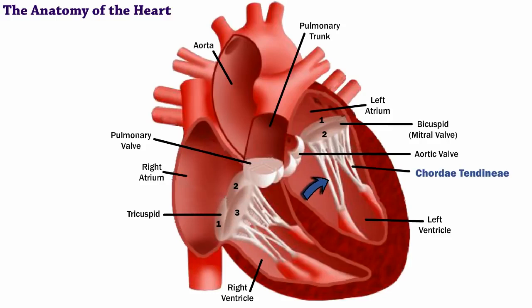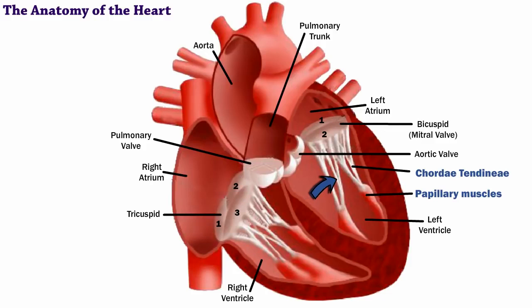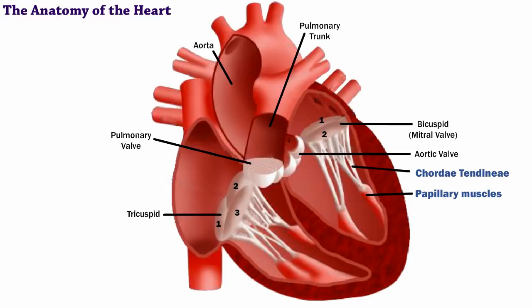Chordae tendineae are attached to the papillary muscles, which are located in the ventricles. When these muscles contract, the white, string-like chordae tendineae become taut. It is these chordae tendineae, together with the papillary muscles, that keep the valves shut when the ventricle contracts.